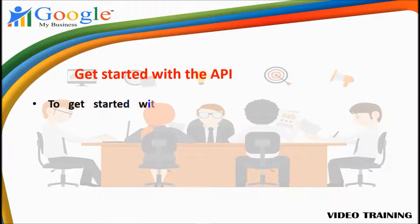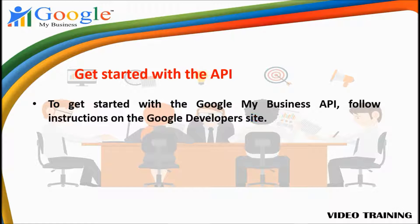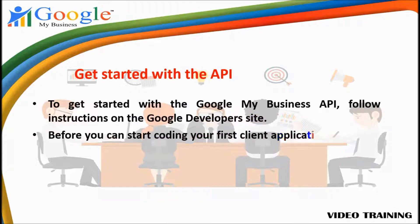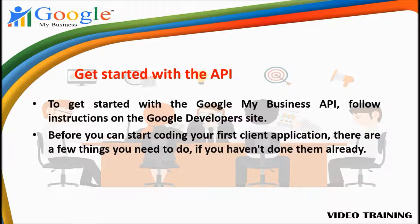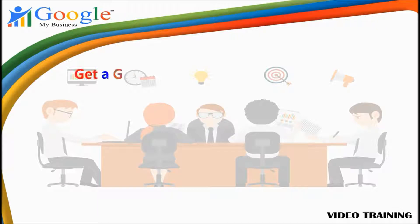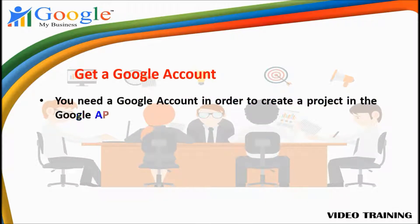Additional capabilities include providing additional attributes for locations like hotel amenities or a restaurant's menu URL, inviting and removing managers, and managing service area businesses. To get started with the Google My Business API, follow the instructions on the Google Developers site. Before you can start coding your first client application, there are a few things you need to do if you haven't done them already.